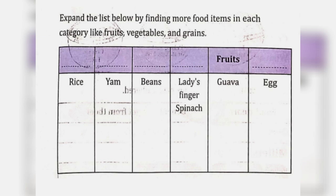Expand the list below by finding more food items in each category like fruits, vegetables and grains. First we have cereals. Under cereals we can write: rice, wheat, barley, maize, oats.